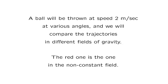In this simulation, a ball is thrown at speed of 2 meters per second at various angles. And we will compare the trajectories in these two different gravitational fields. They will be sketched together in the same coordinate system, and the one in red color is the trajectory in the non-constant field.